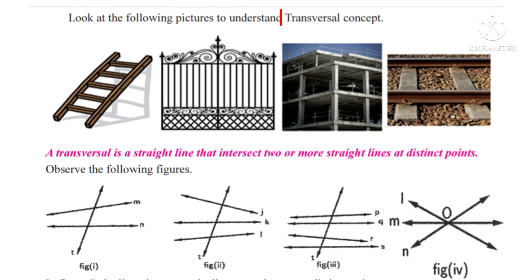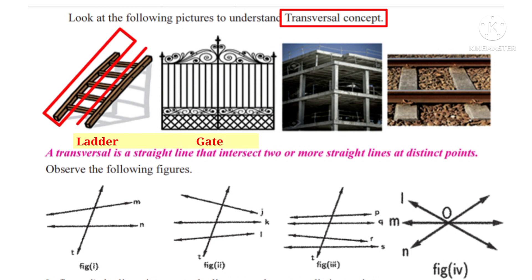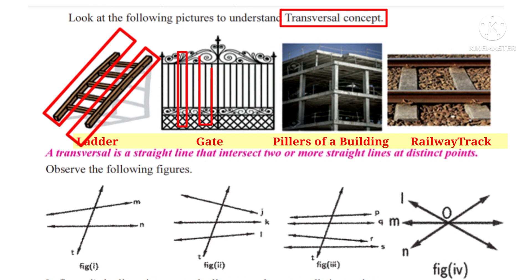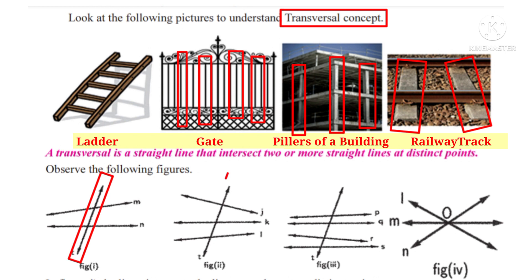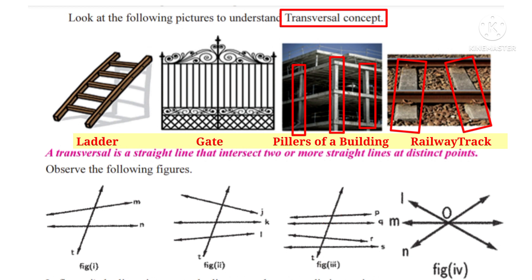Before going to do the exercise, let us see the textbook transversal concept. See the picture of a ladder, gate, pillars of a building and railway track. See the horizontal lines and vertical lines. The vertical lines indicate the transversal concept in different pictures. A transversal is a straight line that intersects two or more straight lines at distinct points. Observe that in the first, second and third figures there is a transversal, but in the fourth figure there is no transversal line.